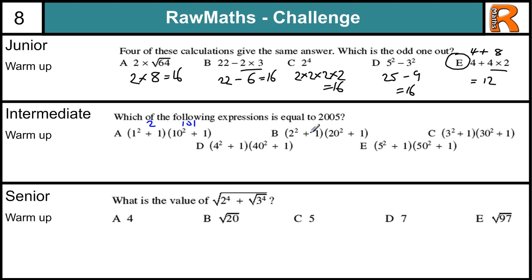This one, 2 squared is 4 plus 1 is 5. 20 squared is 400 plus 1 is 401. And 5 times 401 is 2,005. Let's just have a look at the others.